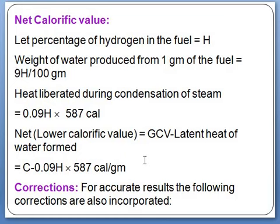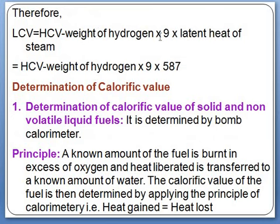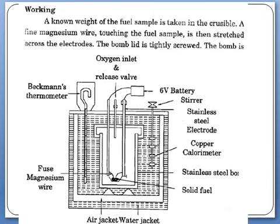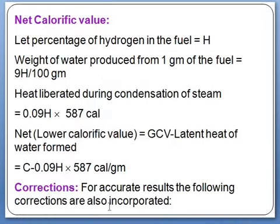If H is the percentage of hydrogen in the fuel, the weight of water produced from 1 gram of fuel is 9H/100 = 0.09H grams. The heat liberated during condensation of steam is 0.09H × 587 calories, where 587 is the latent heat of steam. Therefore, NCV (lower calorific value) = GCV − 0.09H × 587 = C − 0.09H × 587.